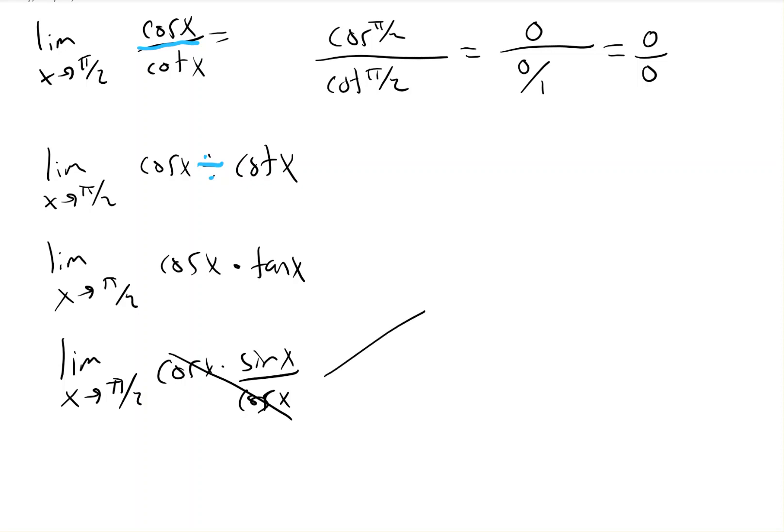Now that it looks different, we can try substitution again. Plugging pi over 2 in for x, the sine of pi over 2 is 1. Therefore, the answer to our question is 1.